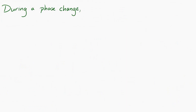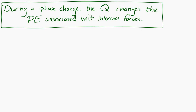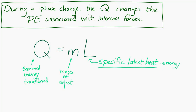During a phase change, when we add thermal energy to the object, we're not changing the temperature or the average kinetic energy of the molecules. Instead, we're changing the potential energy associated with the intermolecular forces. In those situations, we have another equation: Q equals mL. Q is the thermal energy transferred, m is the mass, and L is the specific latent heat — the energy per mass required to change the phase of a substance.